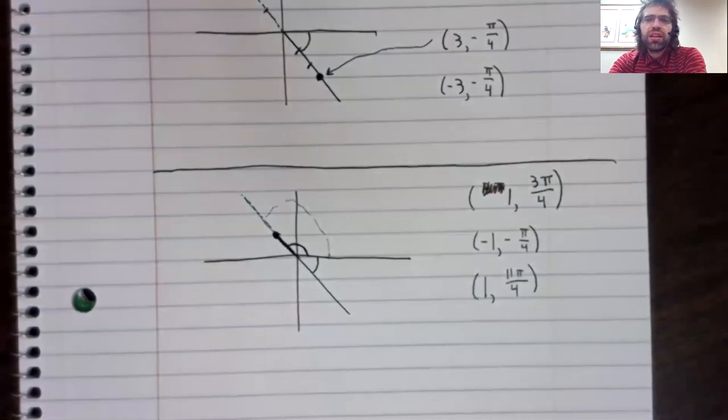This, of course, is a difference from the regular rectangular xy system, where every point can only be represented in one way.